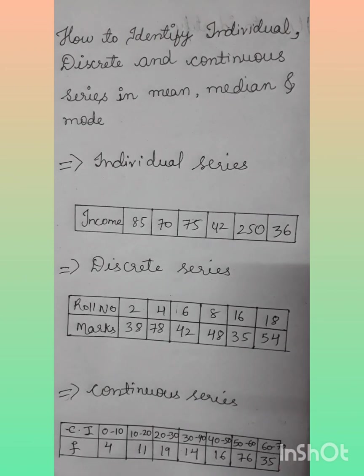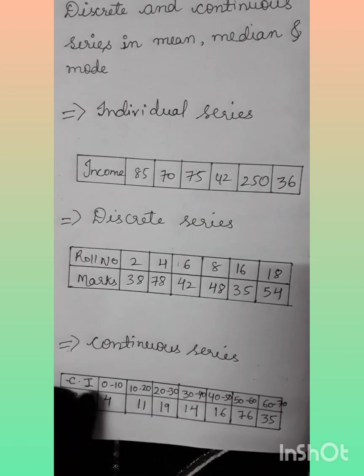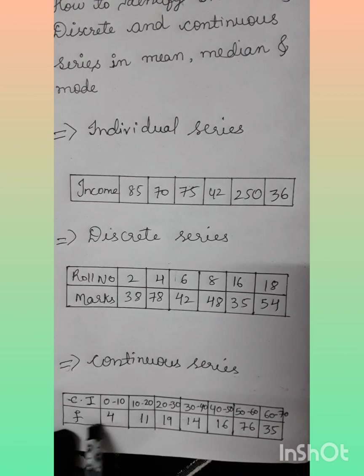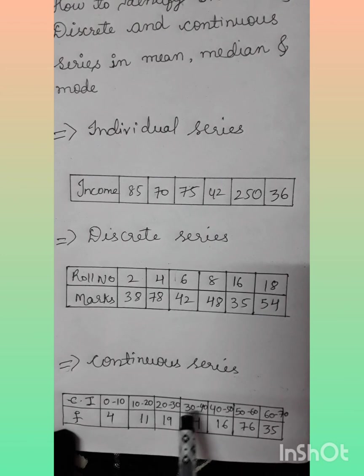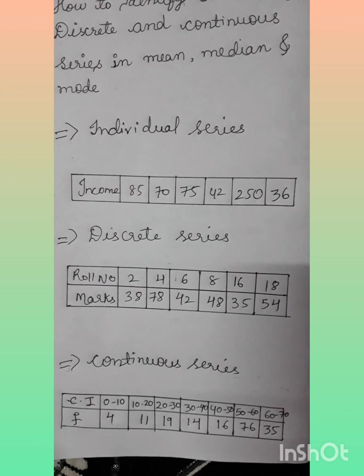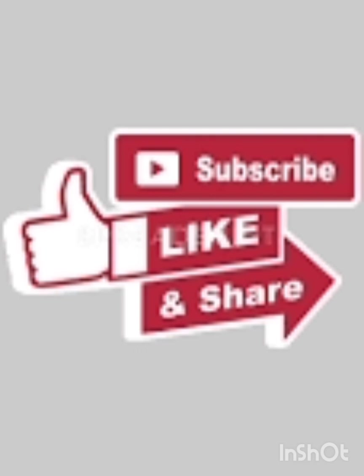And the last one is continuous: two lines with class intervals like 0 to 10, 10 to 20, 20 to 30. Hope it's very clear. Let me know which topics you want me to upload on my channel from statistics. Please like, subscribe, and share.